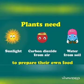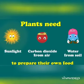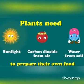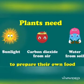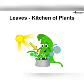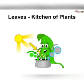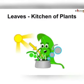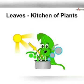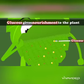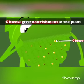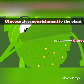Plants need sunlight, carbon dioxide from air, and water from soil to prepare their own food. Photosynthesis takes place in the leaves of the plant. Leaves are the kitchen of the plant.